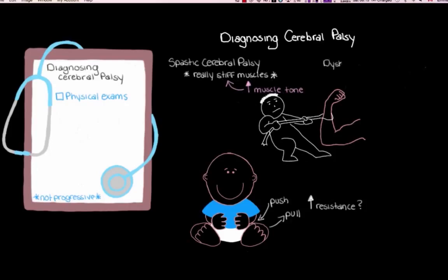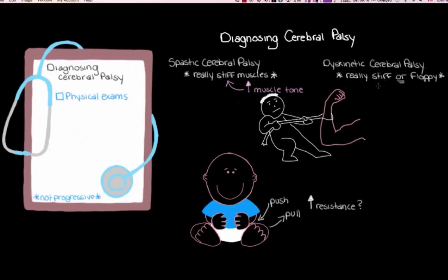For another type — dyskinetic cerebral palsy — muscle tone can actually fluctuate. Sometimes it's really high and muscles feel stiff, but at other times muscle tone can be really low and muscles feel floppy. If during examination the muscles felt floppy instead of stiff, we might consider dyskinetic cerebral palsy. However, since it's far less common than spastic cerebral palsy, and because there are other causes of decreased muscle tone — like muscular dystrophy, Down syndrome, or certain infections — we'd want to rule those out first.